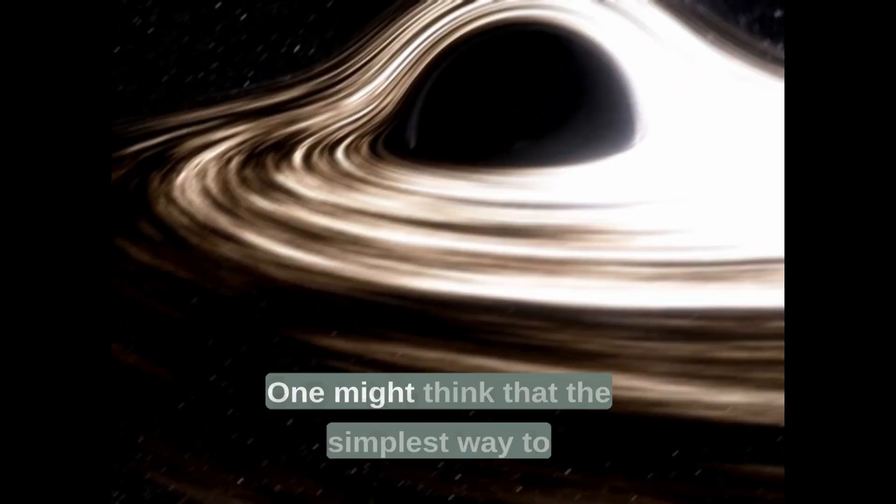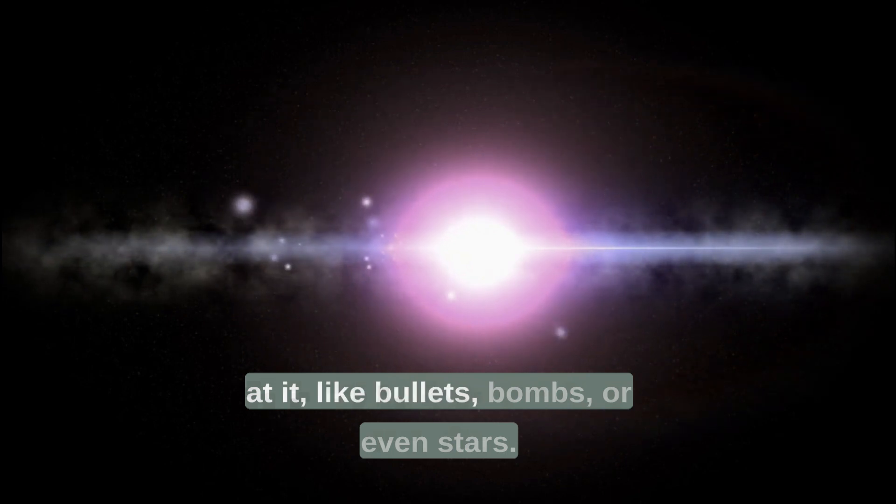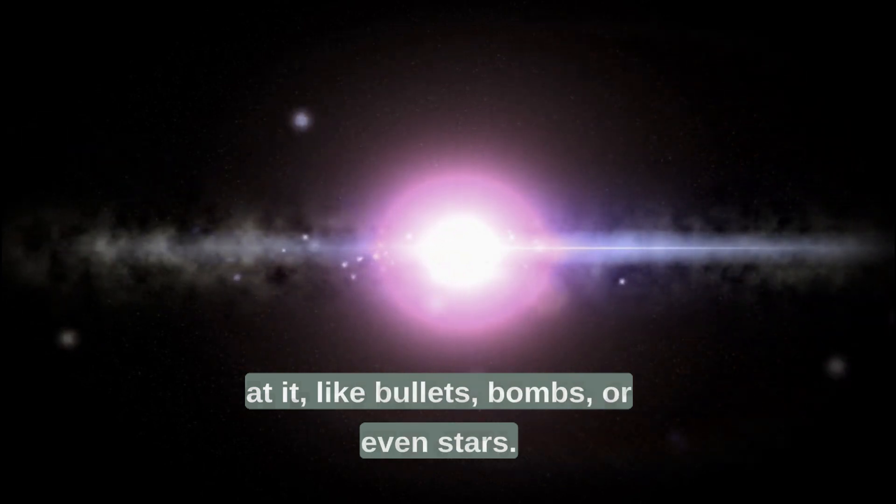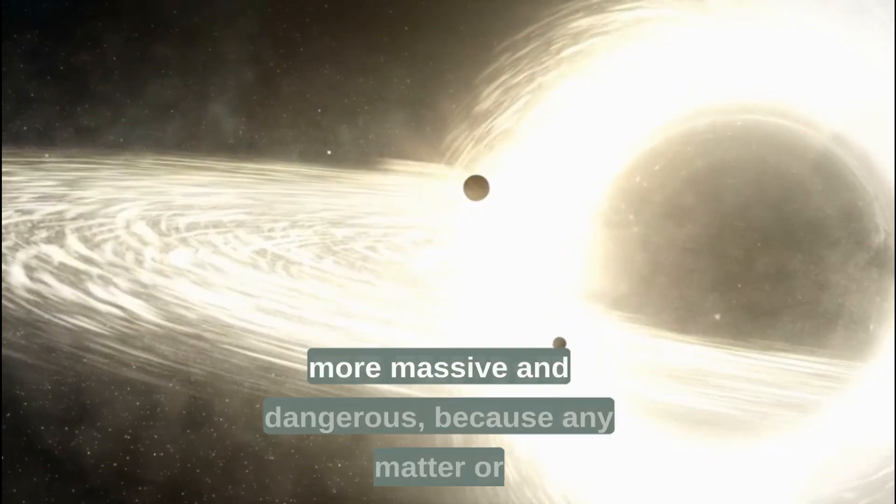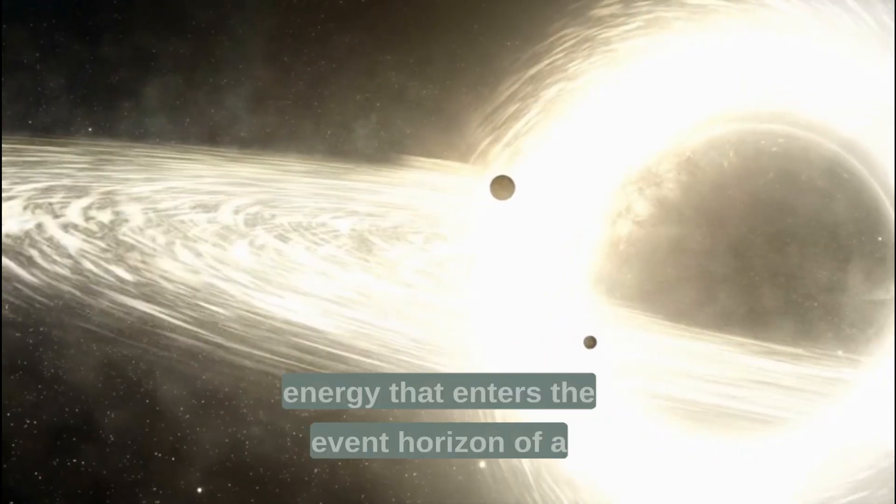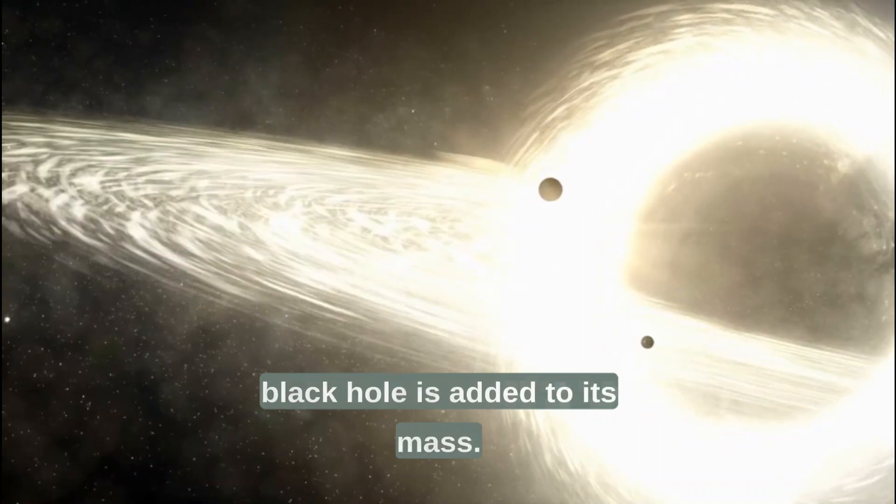One might think that the simplest way to stop a black hole is to shoot something at it, like bullets, bombs, or even stars. However, this would only make the black hole more massive and dangerous, because any matter or energy that enters the event horizon of a black hole is added to its mass.